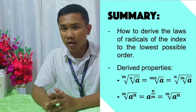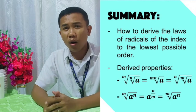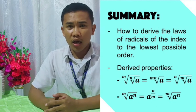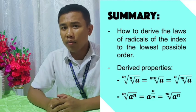To summarize our lesson, we discussed how to derive the laws of radicals of the index to the lowest possible order. We also learned that there are two ways to simplify those types of radical expressions: the nested radical property, and the rational exponent property. If you find this lesson a little bit confusing, you can always rewatch this video and try to practice to master how to do it. Otherwise, congratulations! Good job. That's it for today, and remember — stay safe and stay curious.